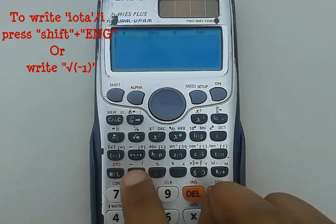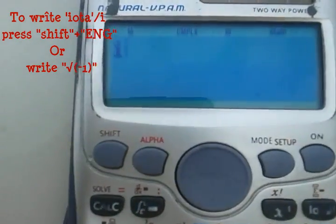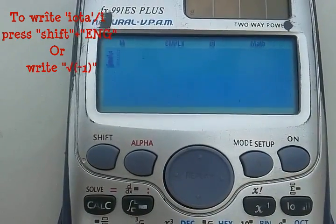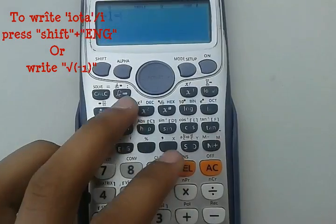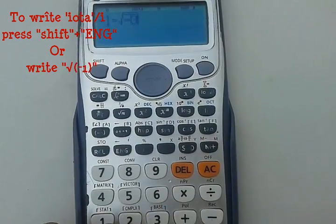To write IOTA, you can press shift and then ENG button, or you can simply write square root minus 1, or the number you want to write IOTA with, with a negative sign in the square root.